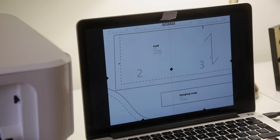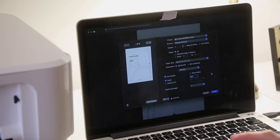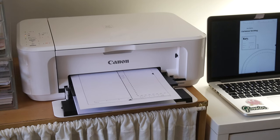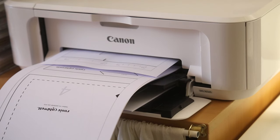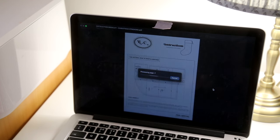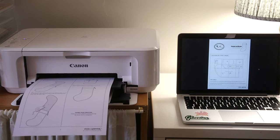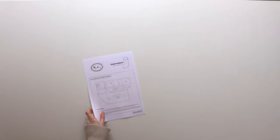We're going to start by printing the pattern out. You're going to want to make sure you're printing it at 100% scale and this pattern can be printed on an A4 or a US letter size printer. Then you can choose whether you want to print the instructions or not. These don't have to be at 100% scale and you don't have to print these. You can just follow along on your computer or your phone.